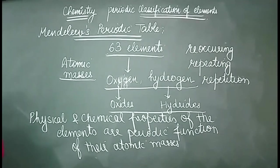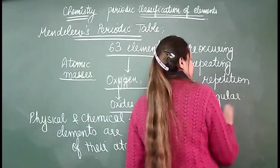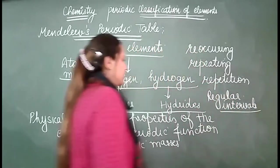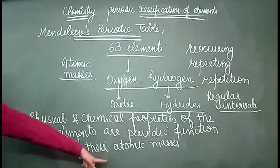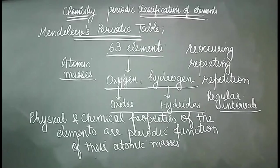Periodically means after some regular intervals, the properties repeat themselves. And all of this he determined on the basis of atomic masses. When classifying elements based on their atomic masses, the physical and chemical properties of these elements repeat themselves after a regular interval.